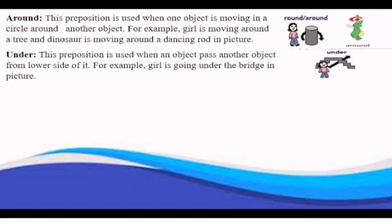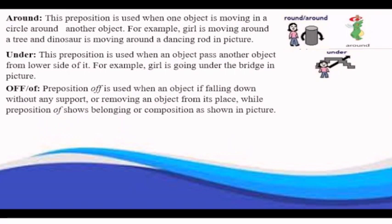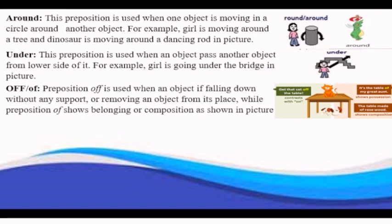Off and of: preposition off is used when an object if falling down without any support, or removing an object from a place, while preposition of shows belonging or composition as shown, in picture.